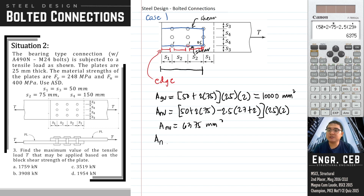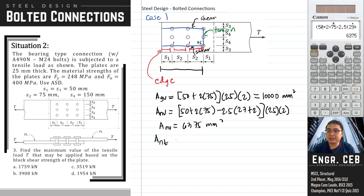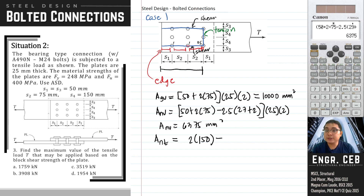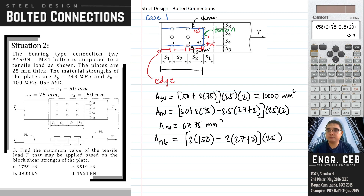Lastly, we solve for the net tension area ANT. The tension area is perpendicular to the application of the load. The gross tension width is 2×S4 = 2×150. We subtract 0.5 + 0.5 + 1 = 2 holes total, then multiply by 25. The net tension area ANT is 6,050 square millimeters.